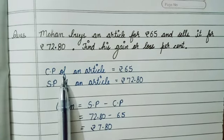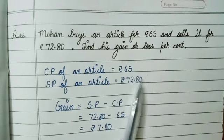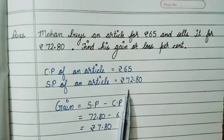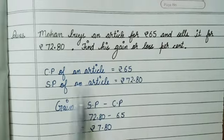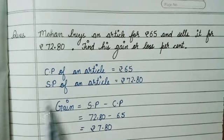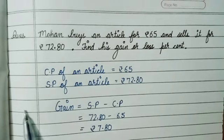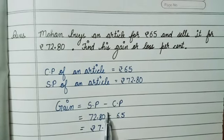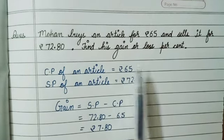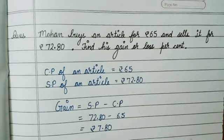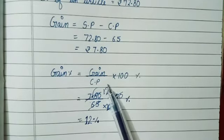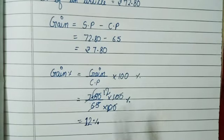When SP is greater than CP, it is a condition of gain. So we need to know the gain formula: gain equals SP minus CP. Then to find the gain percent, the formula is gain upon CP multiplied by 100 percent.